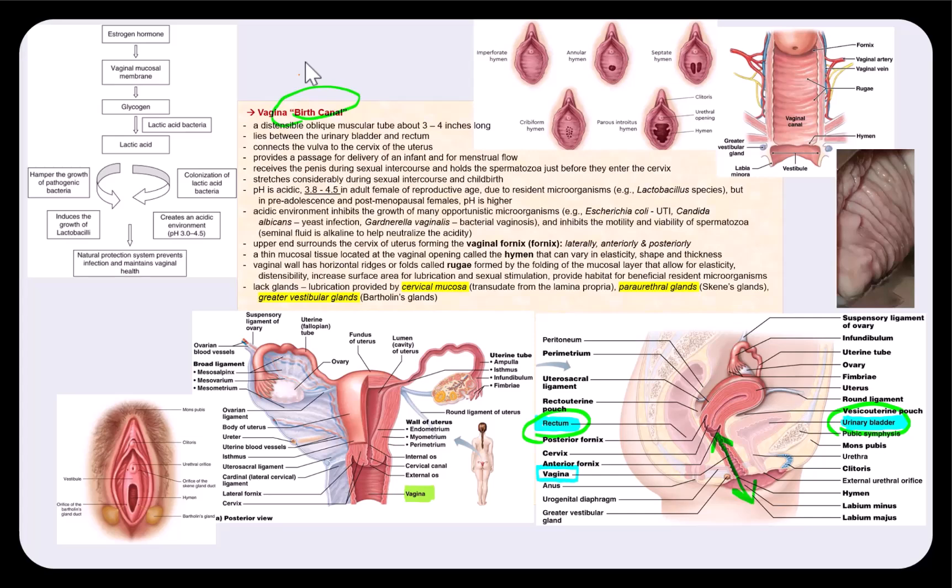And if the male ejaculates, it will hold the spermatozoa just before they enter the cervix. And during intercourse and childbirth, the vagina has the capability to stretch considerably. Now, in an adult female of reproductive age, the pH in the vagina is between 3.8 to 4.5, so it's an acidic environment.